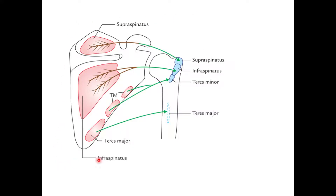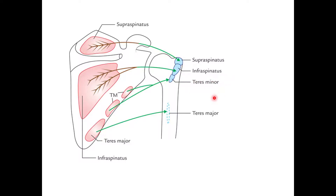This diagram makes the attachments very easy to understand. Supraspinatus arises from the medial two-thirds of the supraspinous fossa and reaches the greater tubercle. Infraspinatus arises from the medial two-thirds of the infraspinous fossa and also reaches the greater tubercle. The greater tubercle receives the insertion of three muscles: supraspinatus at the upper impression, infraspinatus at the middle impression, and teres minor at the lower impression.